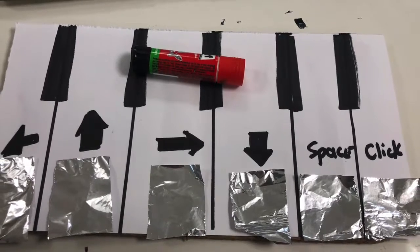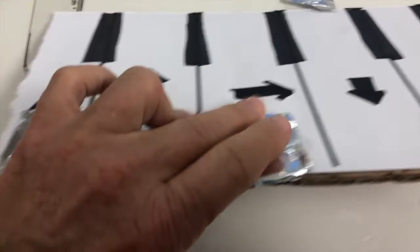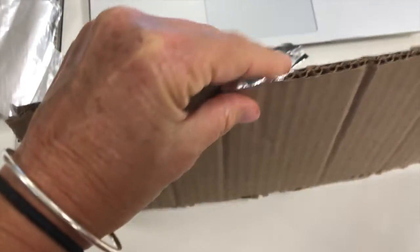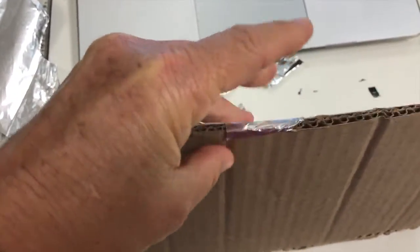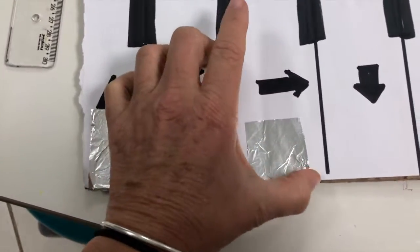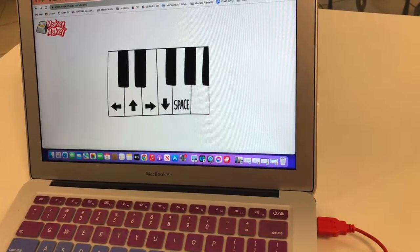Next, we need to cut squares of tin foil that we're going to glue onto our piano. This is what's going to help complete our circuit, and we're going to clip our clips from the Makey Makey set onto here. I wrapped mine around just a little bit to make sure that I had a good connection with the clips.